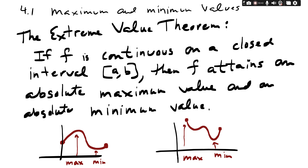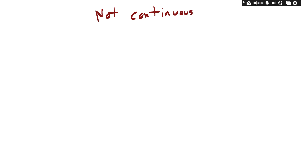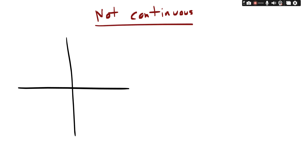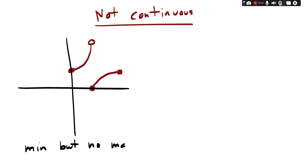Now, what happens if the graph is not continuous — if I can lift my pencil? Once I can lift my pen off the paper I can begin anywhere. For example: I start here and go up. Remember, closed dots mean I am at that point; open dots mean I never reached that point — I get super close but never reach it. Notice this particular graph does have a minimum down at the bottom, but no maximum.